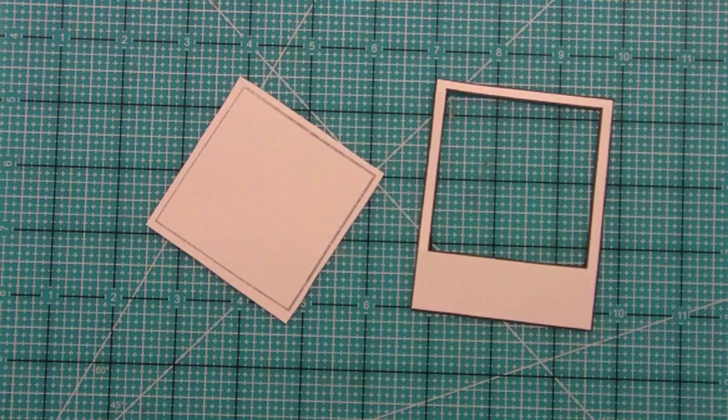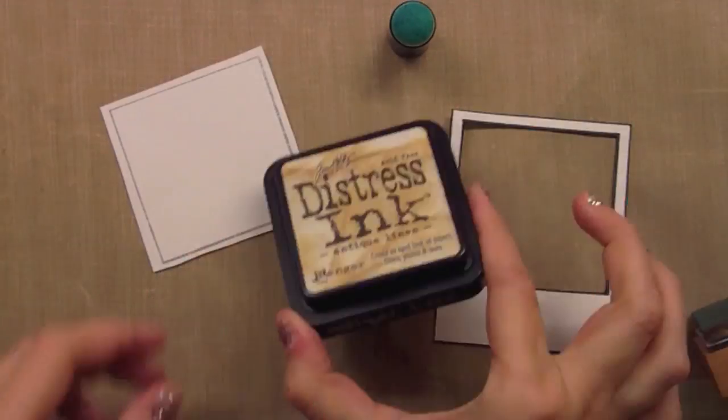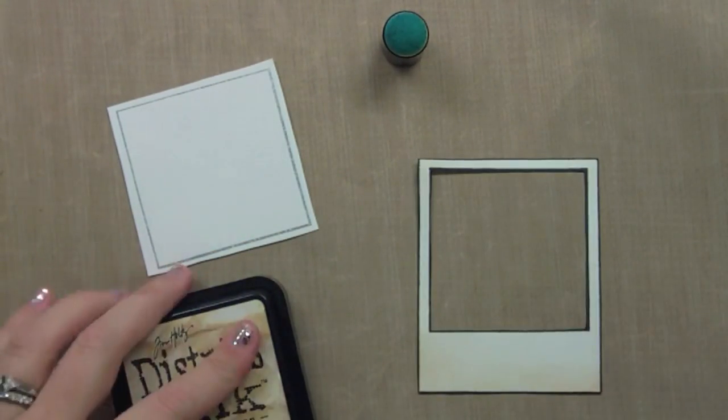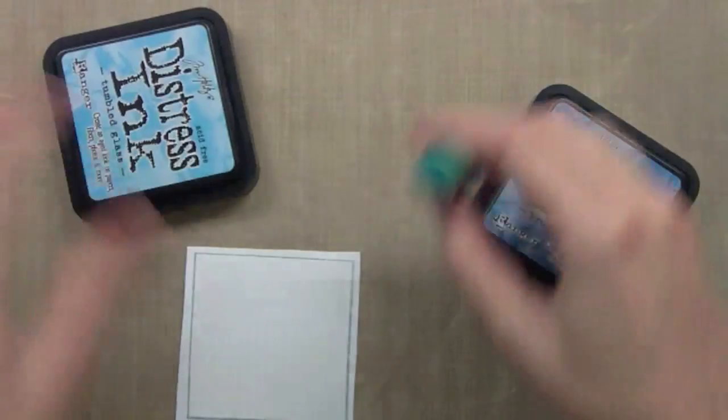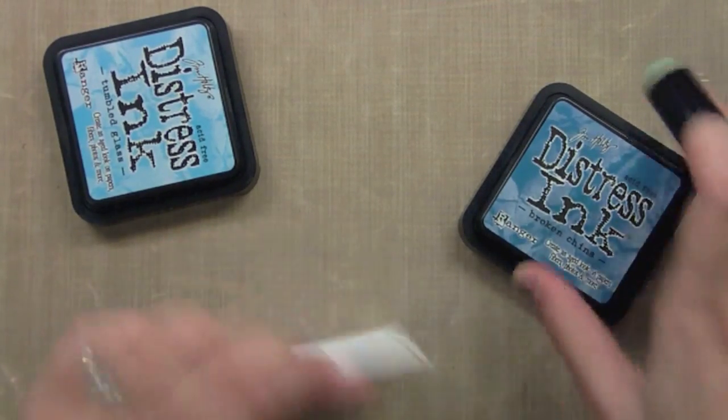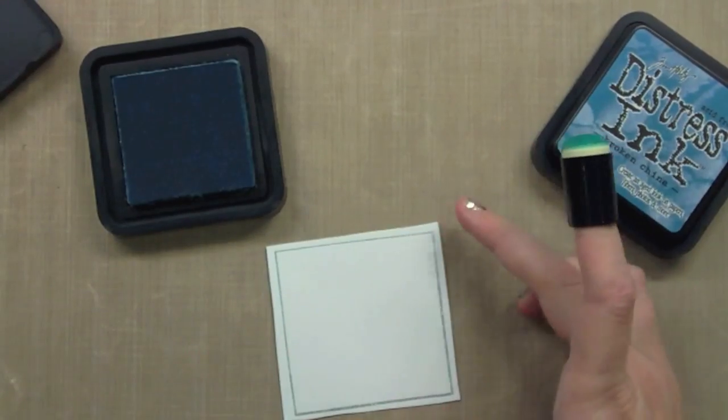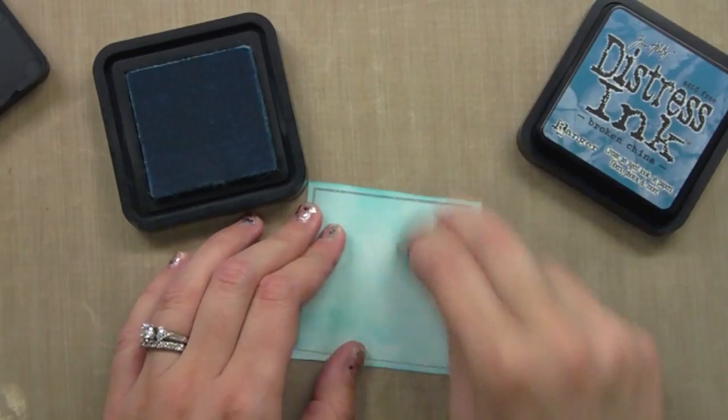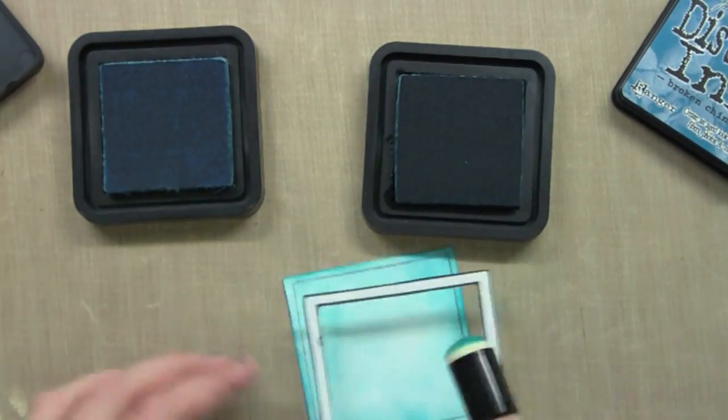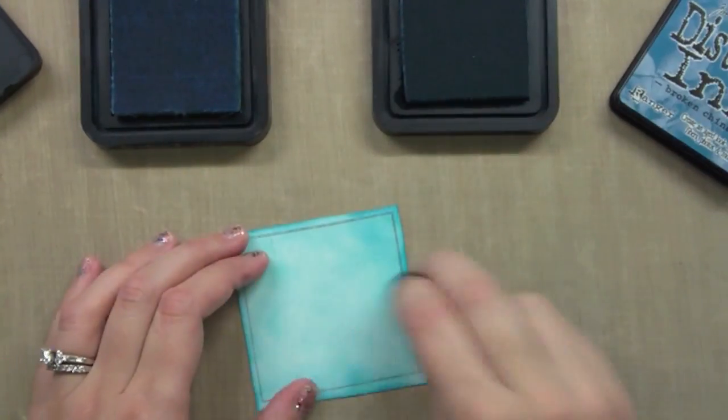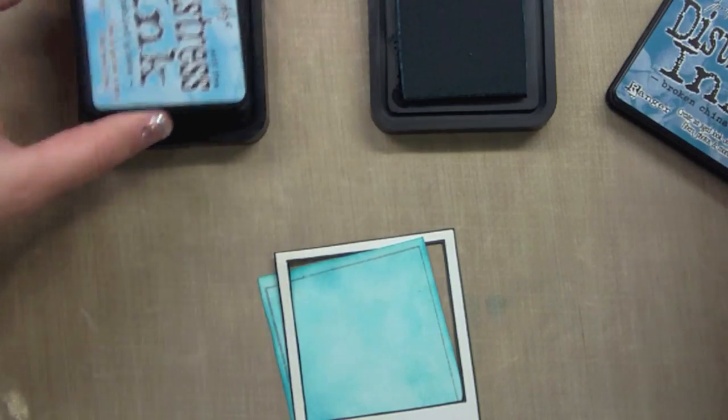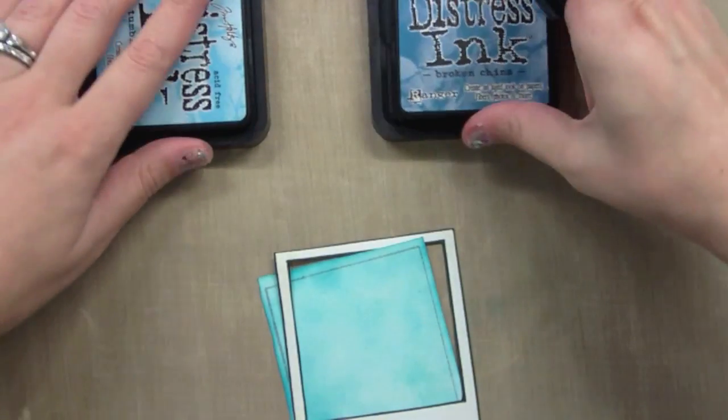Right now I have all of my little pieces for creating my scene, so now we're going to add some distress inks to this Polaroid. This is some Antique Linen, and we're just adding that on to get that cool aged Polaroid look. It really gives it a little something versus leaving it just plain white. Now I have my center square here, and I'm going to add some Tumbled Glass and Broken China. I like using this little sponge dauber for sky because it creates circular motions and it really looks like this flowy, beautiful blue sky. I'm finally happy with it, so I'm all done with this part, and then we can go ahead and start assembling this whole card.